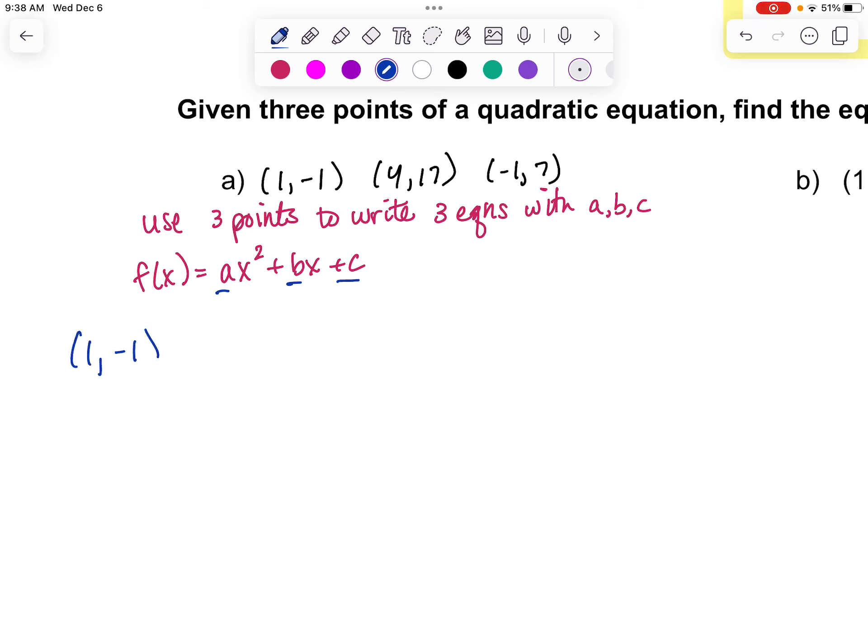So our negative 1, 1, if I plug in negative 1 for y and then plug in 1 for x, that'll give me a plus b plus c. My next point, I'll say I have 17 equals, and then we'll have 16a plus 4b plus c, and then for my last point, 7 equals a minus b plus c.